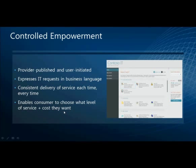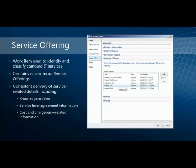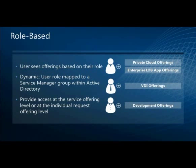Controlled Empowerment is provider-published, user-initiated — IT makes request offerings available and users select them when they want. IT requests are expressed in business language, with consistent prompts each time. Users can select what level of service and cost they want, whenever they want. Service offerings encapsulate one or more request offerings that are published, and role-based access is managed by creating a catalog group, defining the end user role, and granting that role access to specific offerings.